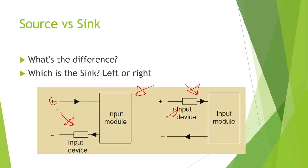So which one is sourcing and which is sinking? The right one — the input is actually supplying the voltage, so it is sourcing the voltage. The left one is sinking — it's connecting to ground. I had my notes backwards.